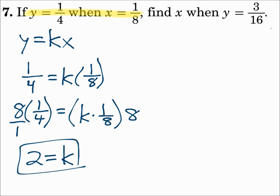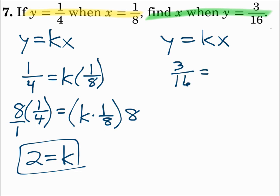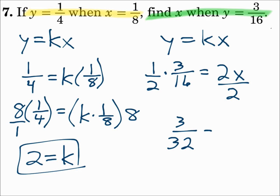Now answer the second part: find x when y equals 3 sixteenths. y is 3 sixteenths, k is 2, so solve for x. That's 2 times x, so divide both sides by 2 — multiplying by 1 half. Multiplying those fractions gives you 3 over 32, and that's x. Find k first, and then use that k to answer the second part of the question.